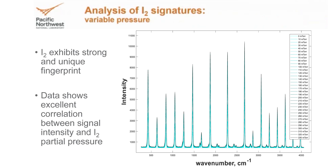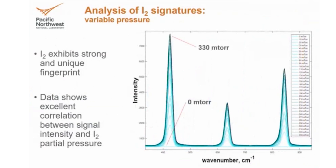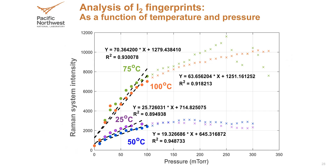Even more importantly, if we zoom in on some of those bands and look at how they behave as we alter the partial pressure of I2 in the gas phase, we see that as we go from zero to higher pressures, that band grows in. This means we can take the intensity of that band, plot it as a function of the partial pressure of I2, and get a calibration curve — indicating that not only can we identify the presence of I2 in the gas phase, but we can quantify it as well.